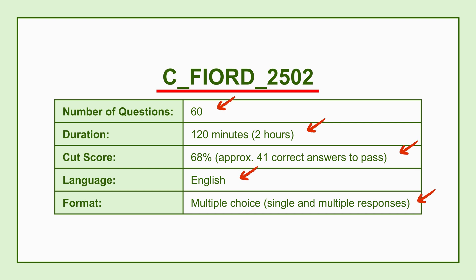Knowing it's two hours for 60 questions immediately makes you think about pacing. Ideally you'd average about two minutes per question, but obviously some will be faster and some might take a bit longer. A pretty common strategy is to go through everything once, answer the ones you definitely know, flag the trickier ones, then come back to those flagged ones later. That way you bank points for the ones you know and don't get stuck early on.